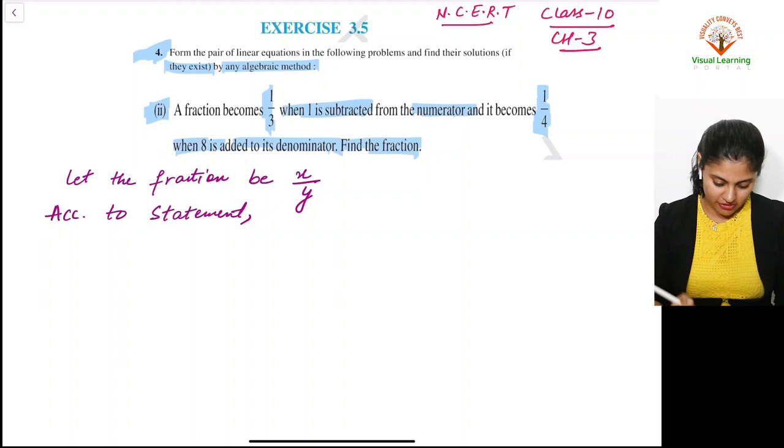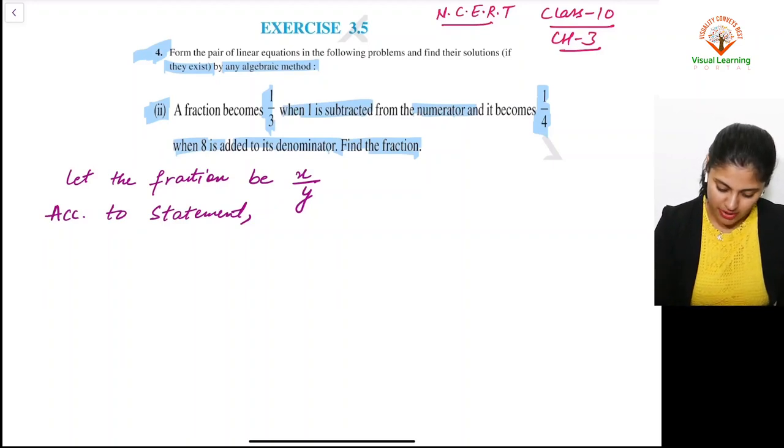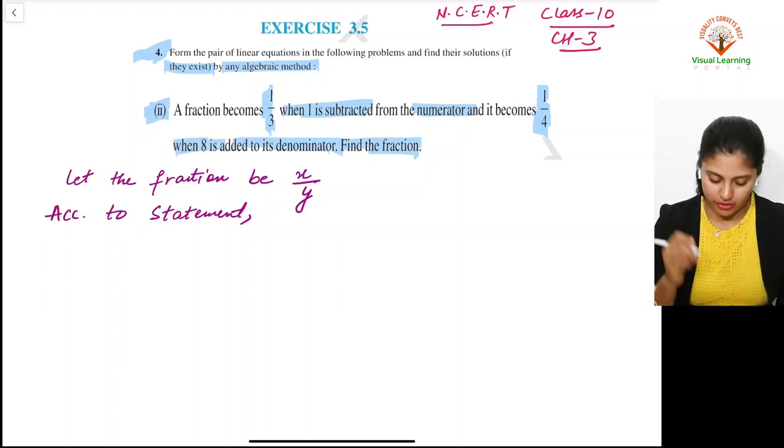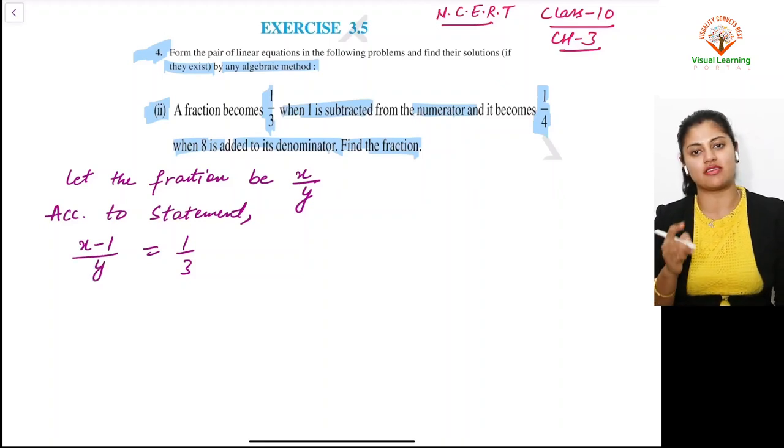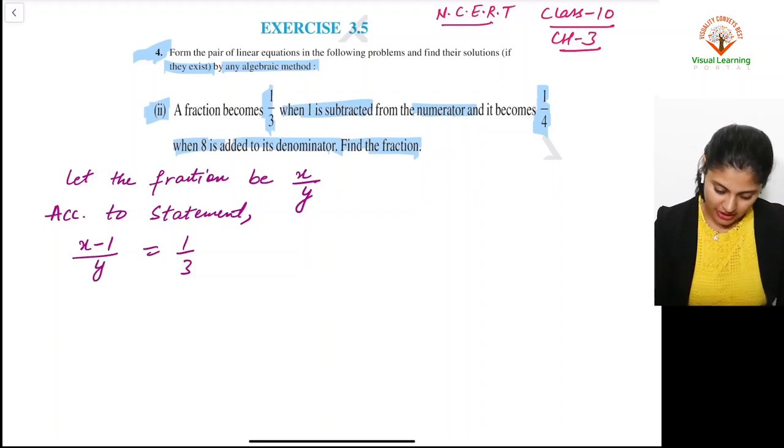A fraction becomes 1/3 when 1 is subtracted from the numerator. That means (x-1)/y = 1/3. One is subtracted from the numerator, and the denominator remains as it is.